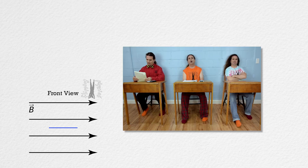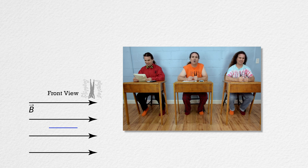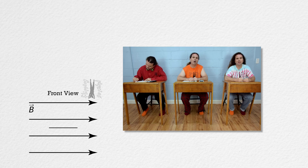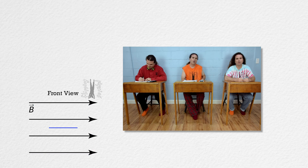I don't get it. Did you just say the magnetic field is oriented like this? What is 'like this'? Oh, I'm sorry. I can see how that was confusing. What I meant to say is that in the front view, the magnetic field is to your right and the loop is oriented like this. Okay, I guess that makes sense. The magnetic field is to the right.